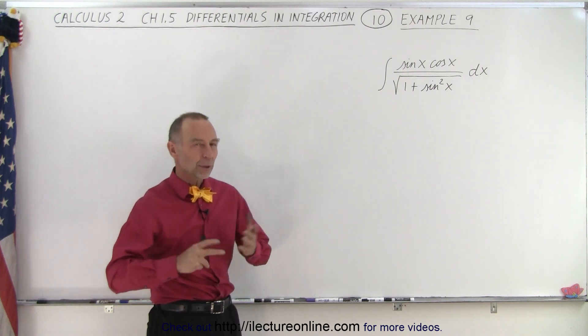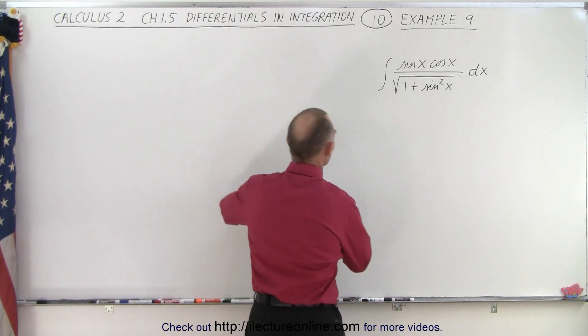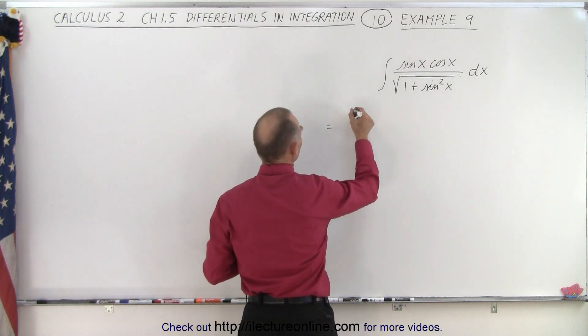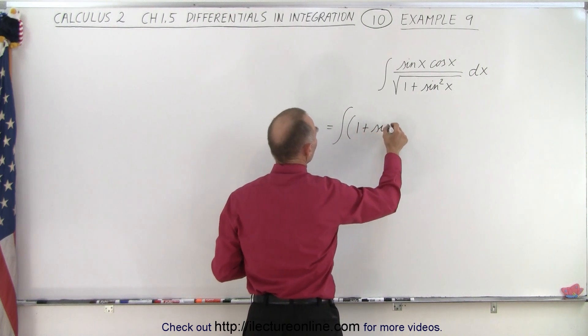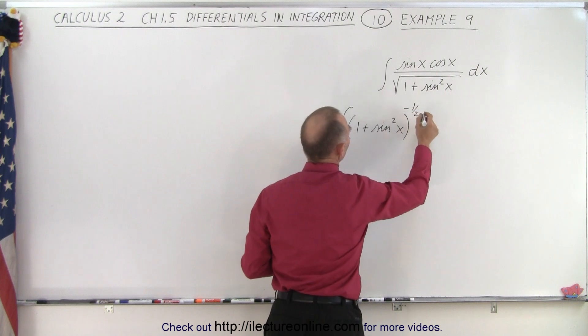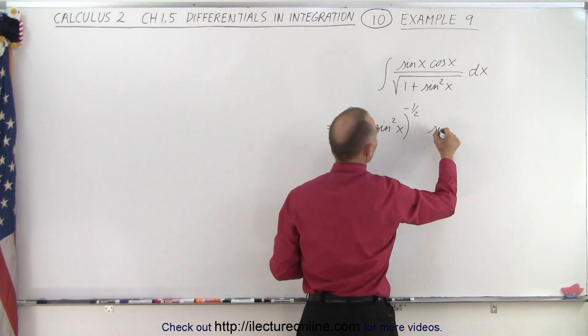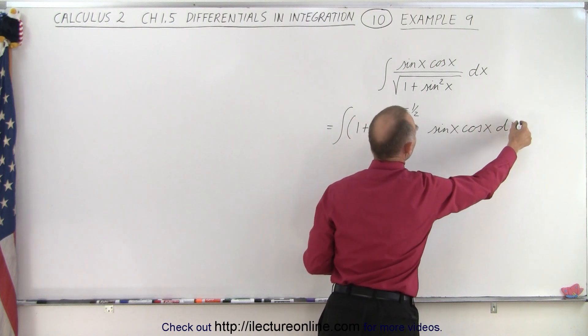But what I always recommend is that you get rid of the radical and put it into exponential form. So when you do that it will look as follows: This is equal to the integral of the quantity 1 plus the sine square of x to the minus 1 half power, because it came from the denominator, times the sine of x times the cosine of x times dx.